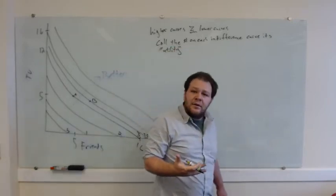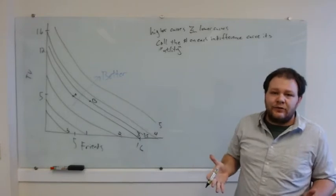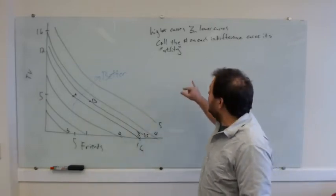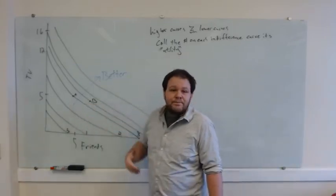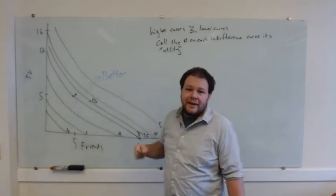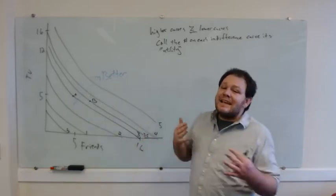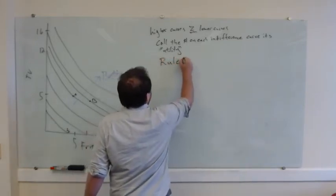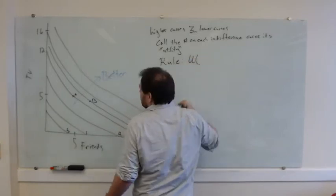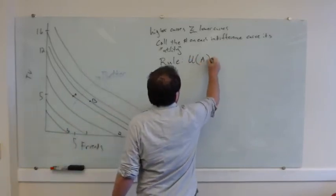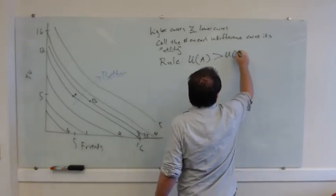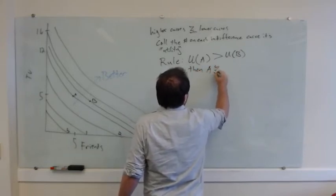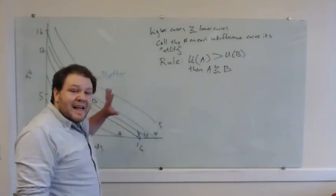Why call it utility? Because utility is a word that we don't use for anything else — it comes from 18th century English philosophy. Essentially, all we want to say is: if you've got a higher utility, I'm going to pick you over something with a lower utility. I call it utility and not well-being or happiness because I don't really know why you prefer one thing to another, I just know that you do. The rule is: if the utility associated with point A is greater than the utility associated with point B, then point A is preferred to point B.